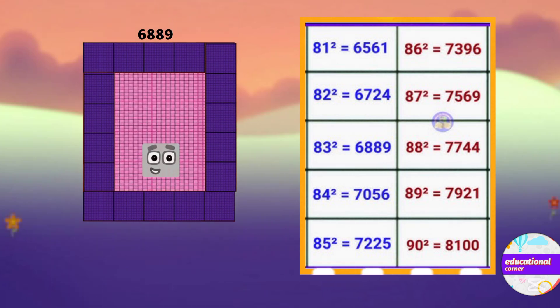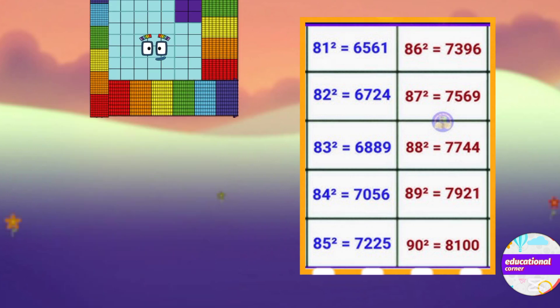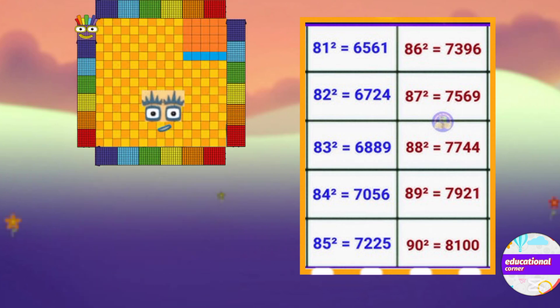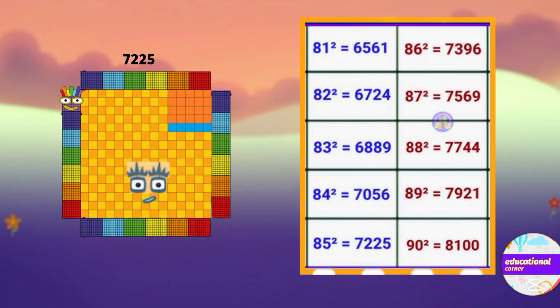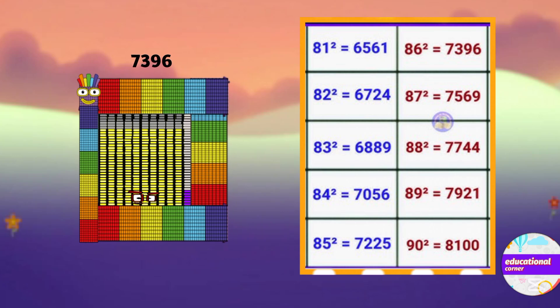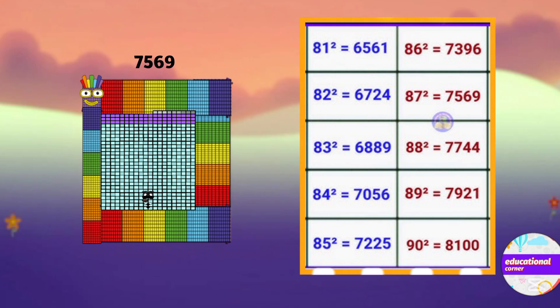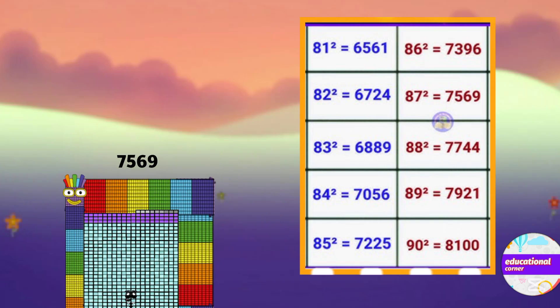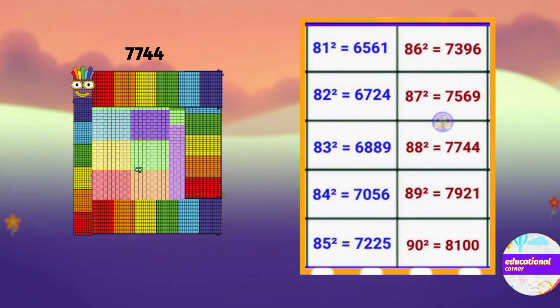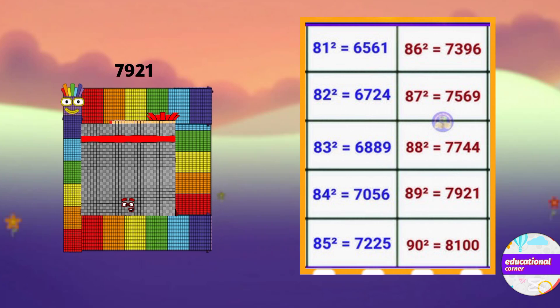The square of 83 is 6889, square of 84 is 7056, square of 85 is 7225, square of 86 is 7396. The square of 87 is 7569, the square of 88 is 7744, the square of 89 is 7921.